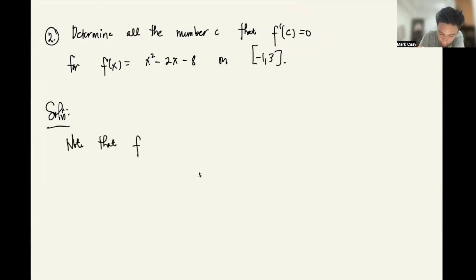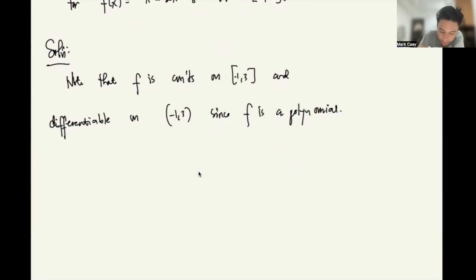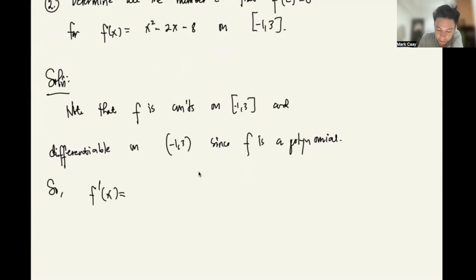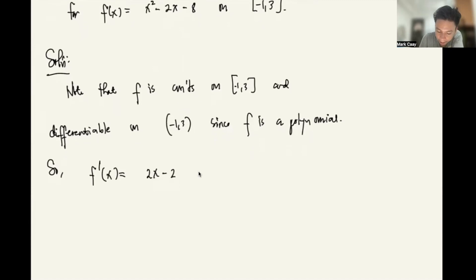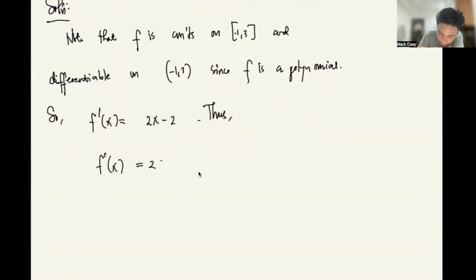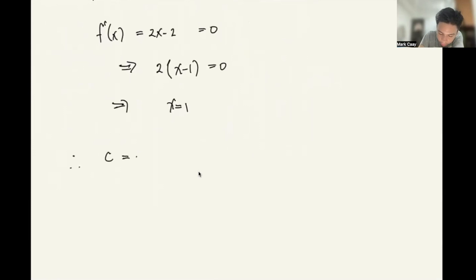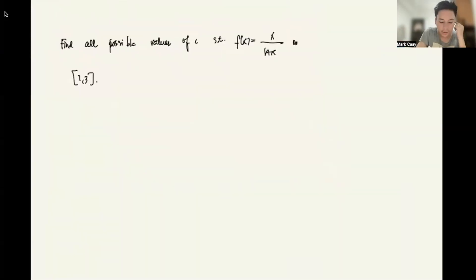Note that f is continuous on [-1,3] and differentiable on (-1,3) since f is a polynomial. So how do we get the process now? We'll solve for f'(x). So based on the given, f(x) is x squared minus 2x minus 8. So the derivative is 2x minus 2. Thus, f'(x) equals 2x minus 2 equals 0. This implies 2x equals 2, so x equals 1. Therefore, the c you're looking for is 1. That's it. If you have any questions or clarification, please let me know.